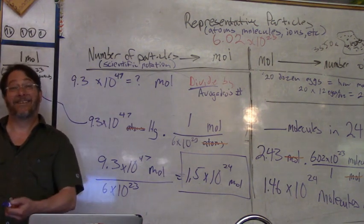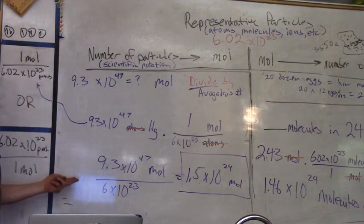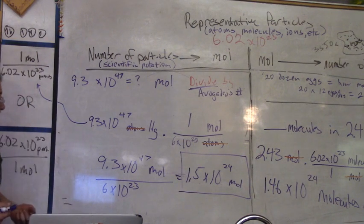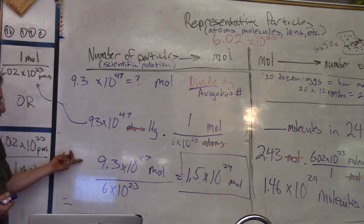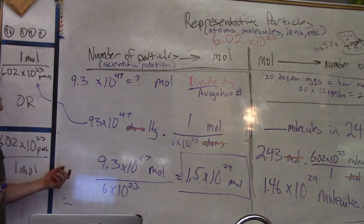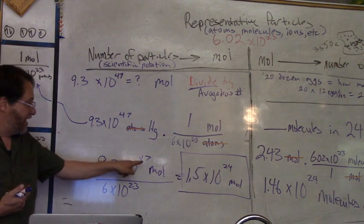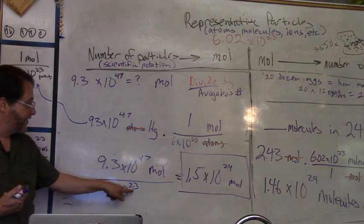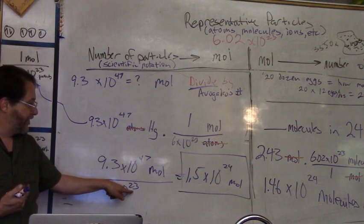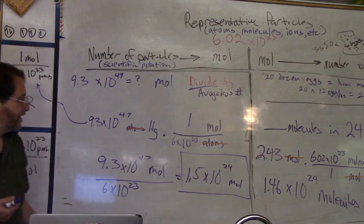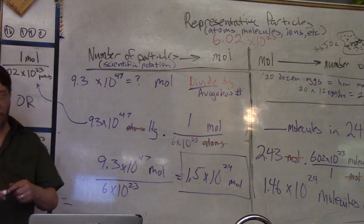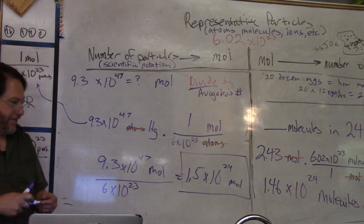Then you ask yourself, does that make sense? It's a little harder with two numbers in scientific notation, but 9 divided by 6 is always 1.5. And then you have your 10 to the 47th, 10 to the 23rd. Dividing means you subtract the exponents from each other, so it would be 47 minus 23 = 24.